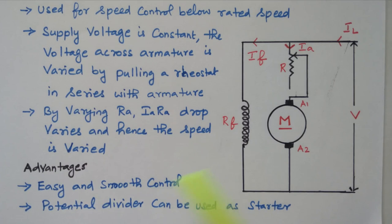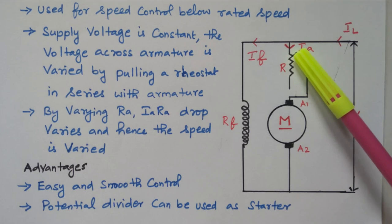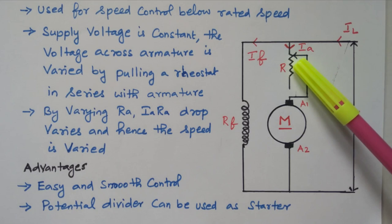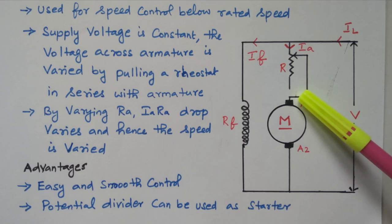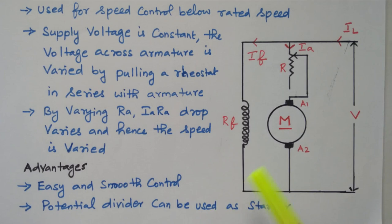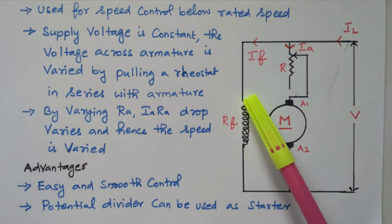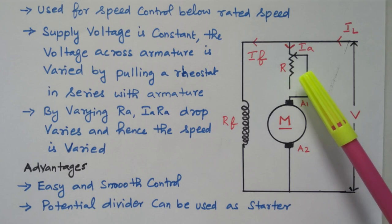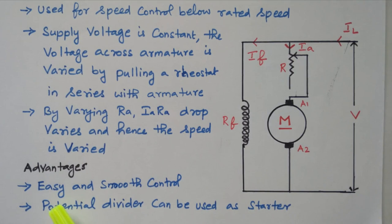By varying the Ra, the IA RA drop varies, and hence the speed of the motor is varied, because this IA RA drop is one of the parameters in the speed equation. If the rheostat position allows full current to flow through the armature, then as we increase the resistance, voltage drops across the resistance and only the remaining value of current flows through the armature. So by varying this drop we can vary the speed of the motor. Here the rheostat is connected in series with the armature to vary the armature resistance drop.